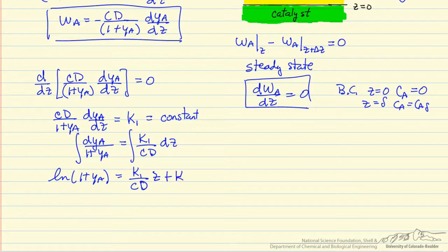So we have these boundary conditions, so when Z equals 0, Ca equals 0, which means Ya equals 0, and you can make this substitution into the equation, the log of 1 equals K2, and the log of 1 is 0, so therefore K2 is 0.